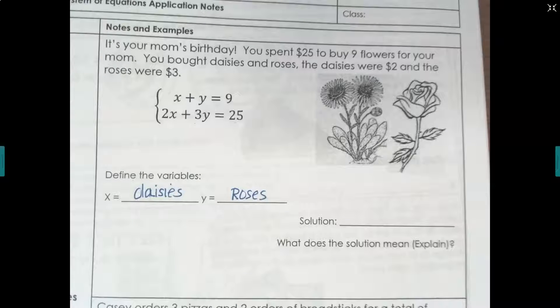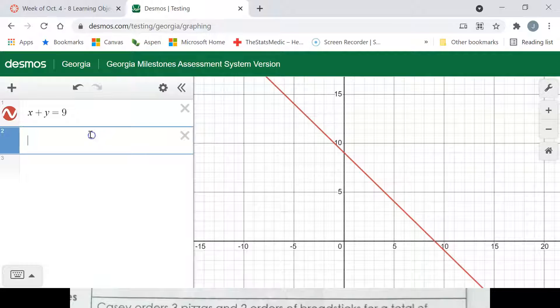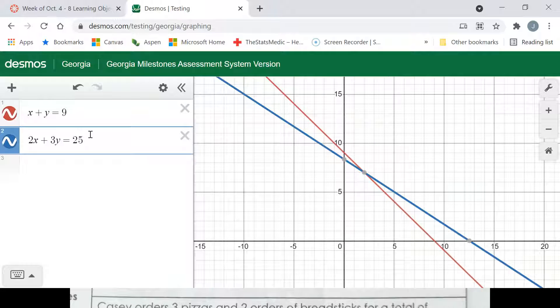I'm going to put those two equations in. So the first equation is x plus y equals nine, and it's going to pop our graph in for us. We're going to click right below that and stick in our second equation, which was 2x plus 3y equals 25. And it shows us our second one.